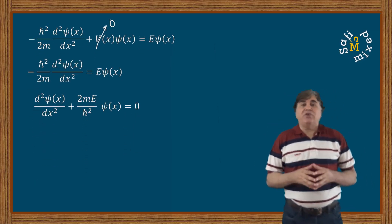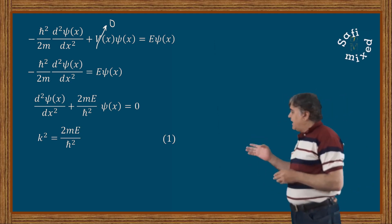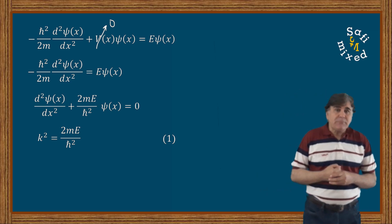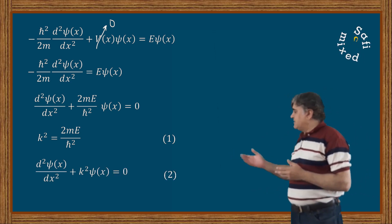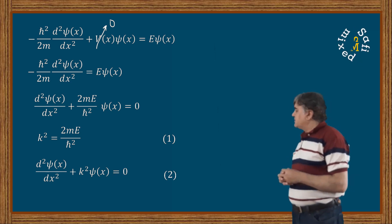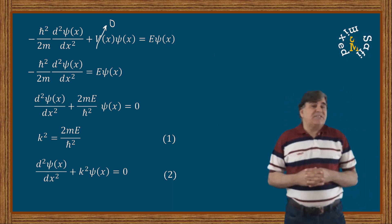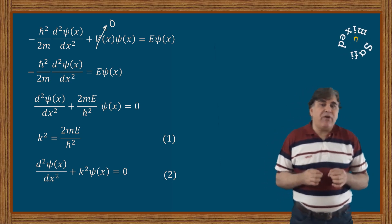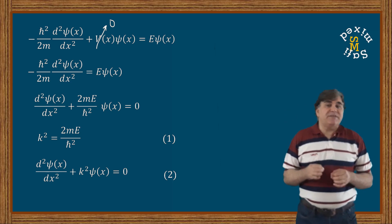To put the equation into a more manageable form, I define a quantity k such that k² = 2mE / ħ², where E is the total energy of the free particle. This transforms the equation into: d²ψ(x)/dx² + k²ψ(x) = 0, which is equation two, describing the dynamics of a free quantum mechanical particle. Before solving it, let us discuss the physics of equation one.